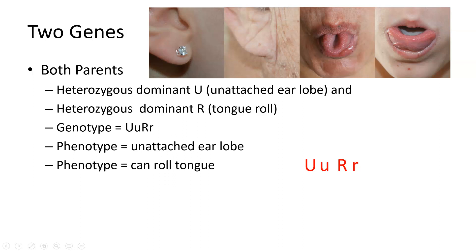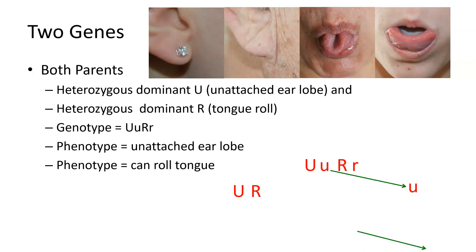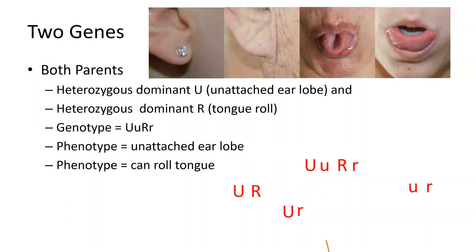If we look at the UuRr genotype, the way the genes would pair up after meiosis is you could get the U pairing up with the R, which would allow the lowercase u to pair up with the lowercase r. Or you could get the U pairing up with the lowercase r, which would have the lowercase u pair up with the R.